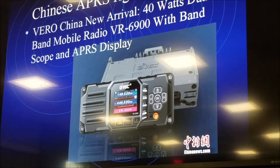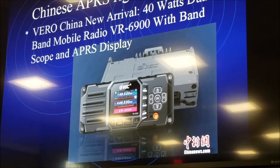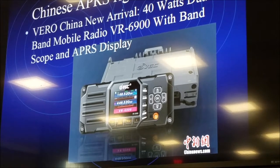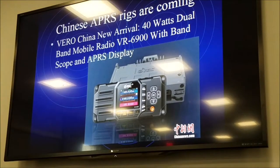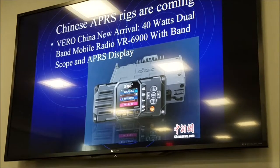The Anytone 878 DMR handheld has an analog APRS mode as well as a DMR APRS mode that'll send data to a talk group. DMR is the low-cost digital protocol, and a lot of Chinese radios are coming with DMR along with local repeaters and hotspots. DMR APRS will probably gateway back to the regular APRS network.